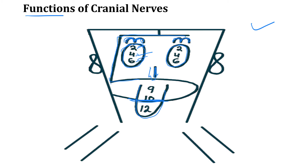Next is the facial nerve, CN7, drawn on both sides of the face. This is a mixed type cranial nerve — both sensory and motor. Its sensory function is giving the sense of taste to the anterior two-thirds of the tongue. Its motor functions include facial expressions, lacrimation, and salivation.